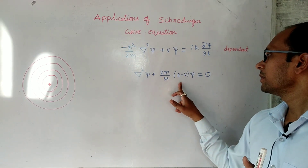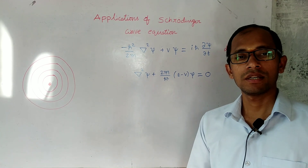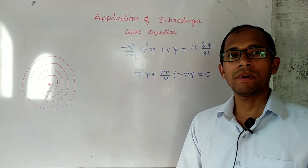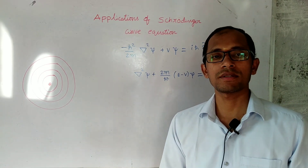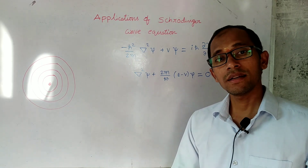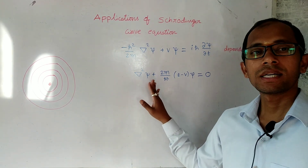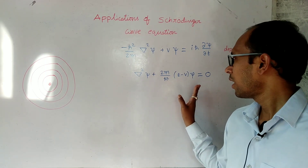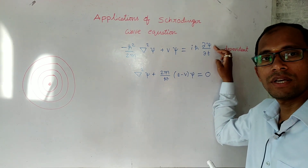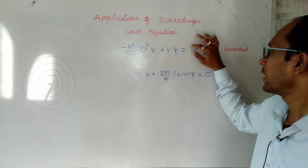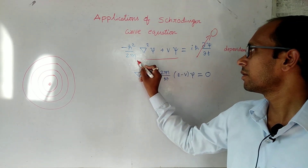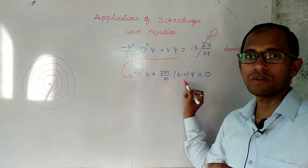Now, there is also the time-independent wave equation. That means, in situations where the particle is moving but the matter wave does not depend upon time — that is, the energy values do not depend upon time and there is no change in properties of the wave with respect to time — then for those cases we use the Schrödinger time-independent wave equation. How it comes: basically, if with respect to time there is no change in the wave function, then that time-derivative factor becomes zero. Once you put that value as zero, the remaining equation becomes the Schrödinger time-independent wave equation.